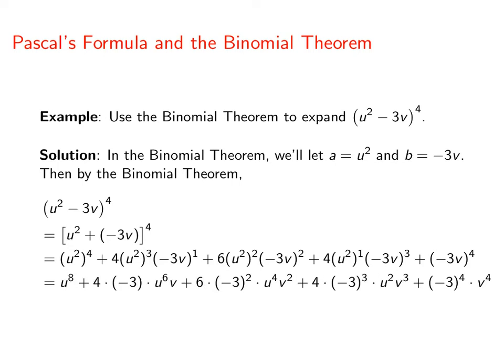Then, we'll just do a little bit of algebra and we end up with our final result. u to the eighth minus 12u to the sixth v plus 54u to the fourth v squared minus 108u squared v cubed plus 81v to the fourth.